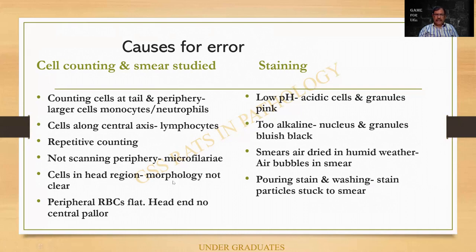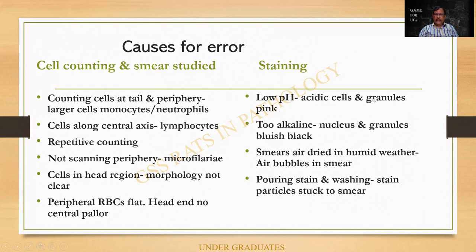Microfilaria is an exam slide that will be kept under high power, not under oil immersion. The cells in the head region will not be spread out and therefore morphology cannot be clearly made out. In the peripheral region the RBCs are flat. It is only at the junction that you can make out the central pallor and the peripheral rim of hemoglobinization. These are some causes for error. Technically, it can also be because of staining — low pH means an acidic pH and all cells appear pink with no blue granules. Too alkaline means they become dark blue or bluish black. When the smear is air dried in humid weather, there can be air bubbles.